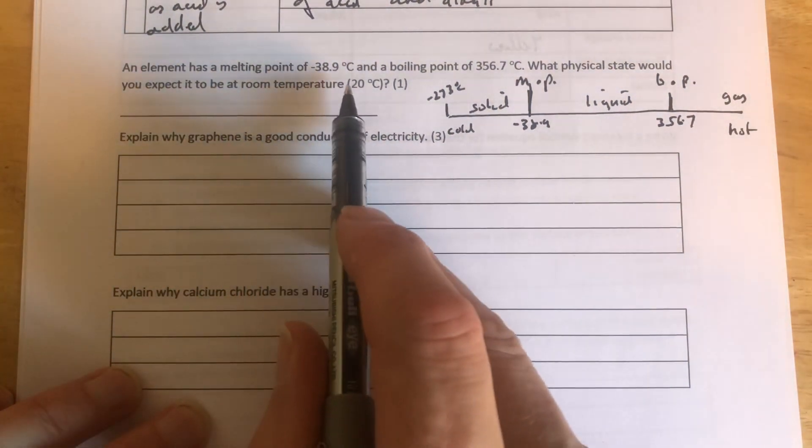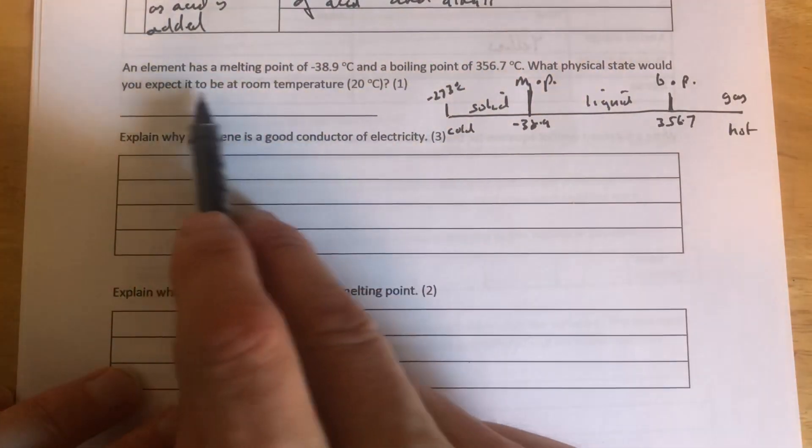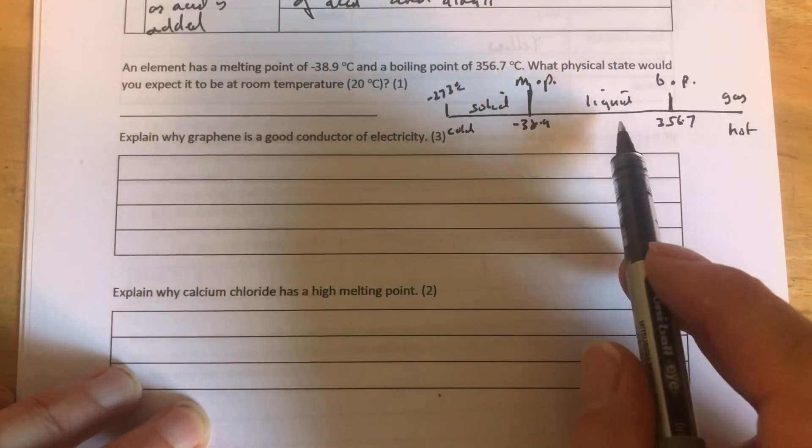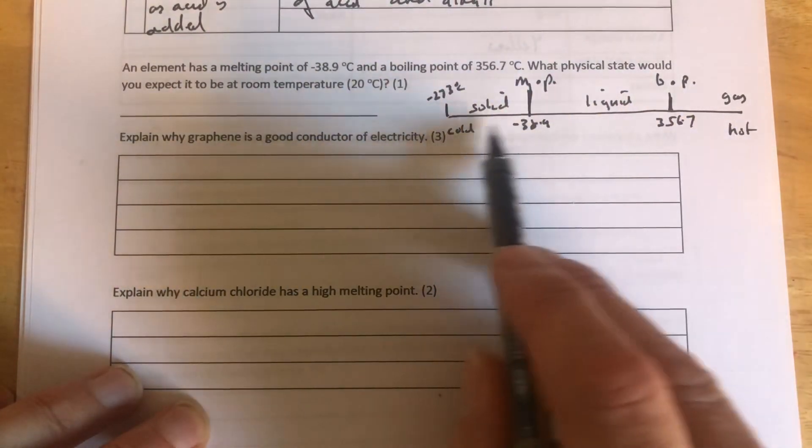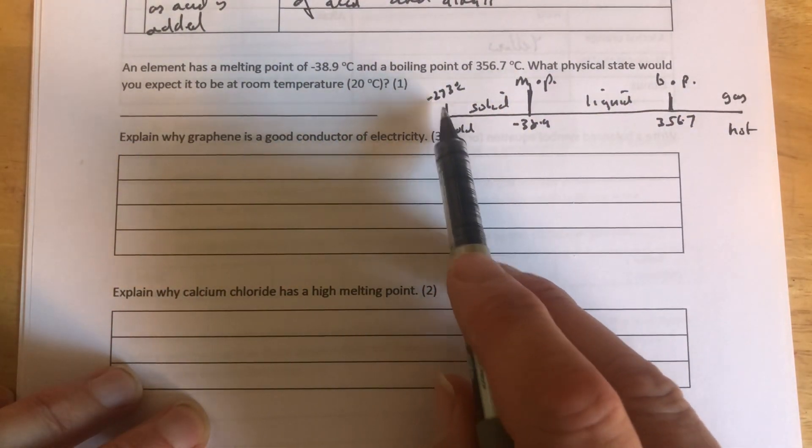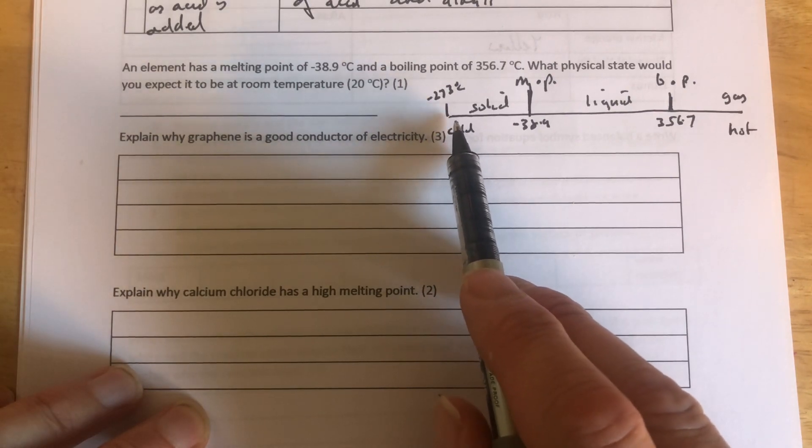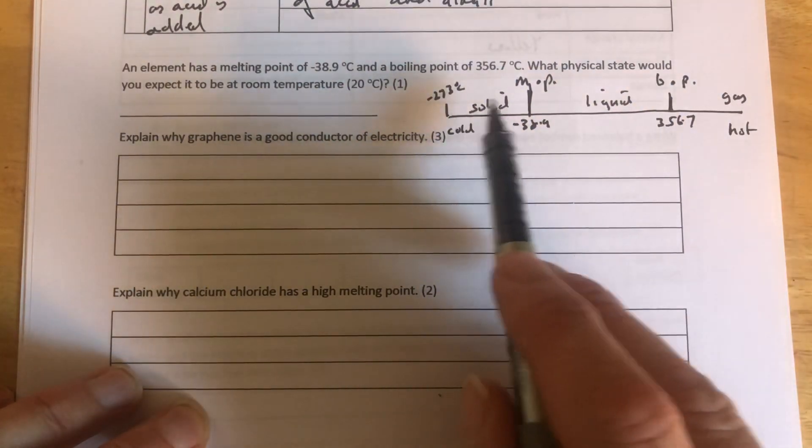Now, all we've got to do is find out what physical state it will be at 20 degrees. So we need to find where 20 is going to go on this number line. We start at minus 273 because that's as cold as we get, and then the numbers are going to get bigger as we go up this line.